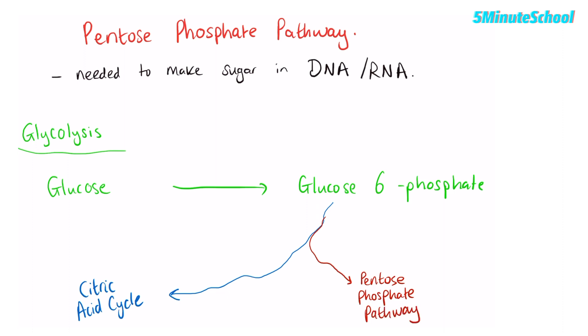The pentose phosphate pathway occurs in the cytosol of the cell and it doesn't require any energy in the form of ATP. And there's no energy that's produced in the process.